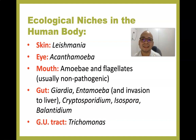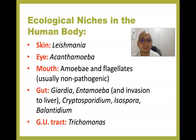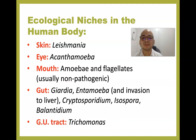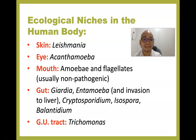Protozoans may inhabit different ecological niches in the body: in the skin, Leishmania is found; in the eyes, Acanthamoeba; in the mouth, amoeba and flagellates such as Entamoeba gingivalis and Trichomonas tenax. In the gut: Giardia lamblia, Entamoeba — which is capable of extra-intestinal parasitism invading the liver — Cryptosporidium, Isospora (commonly found among immunocompromised hosts), Balantidium coli, and in the genitourinary tract, Trichomonas vaginalis.